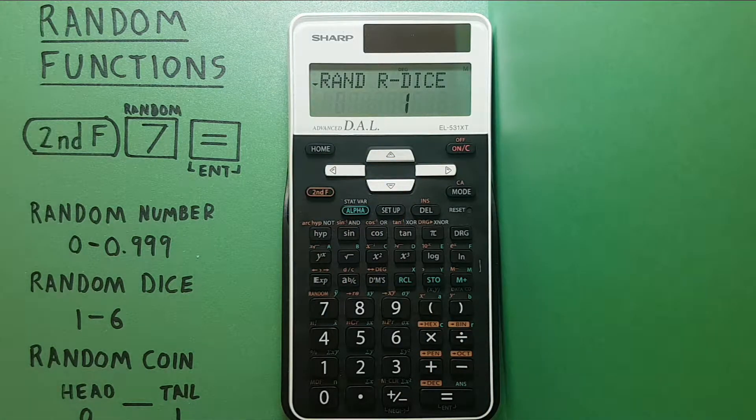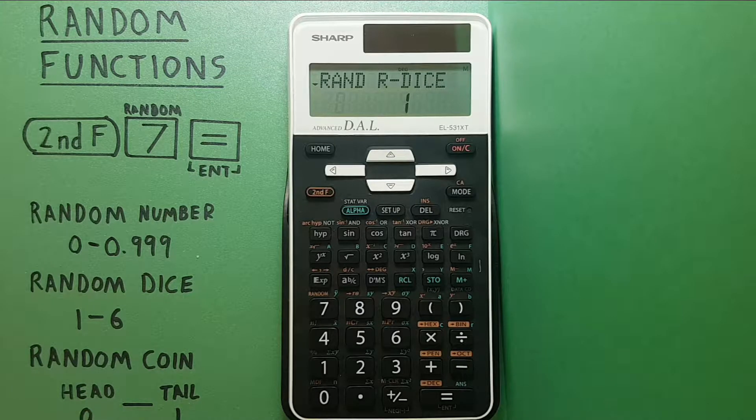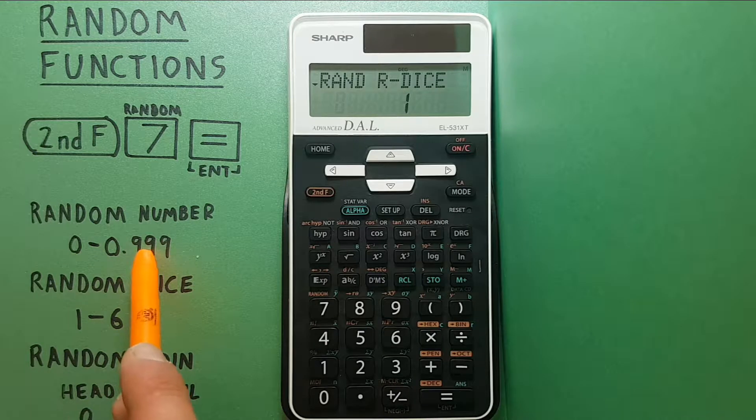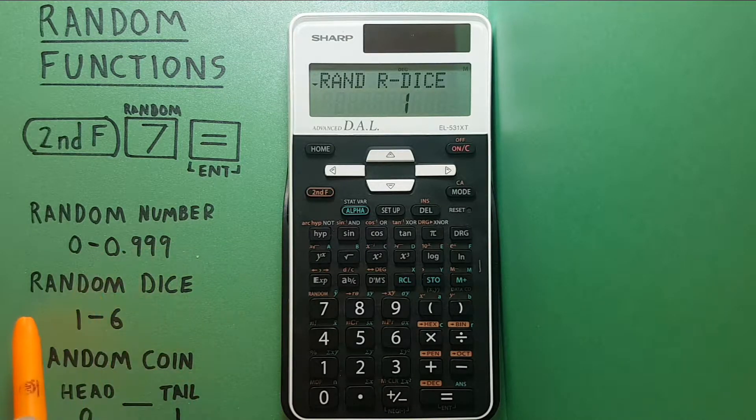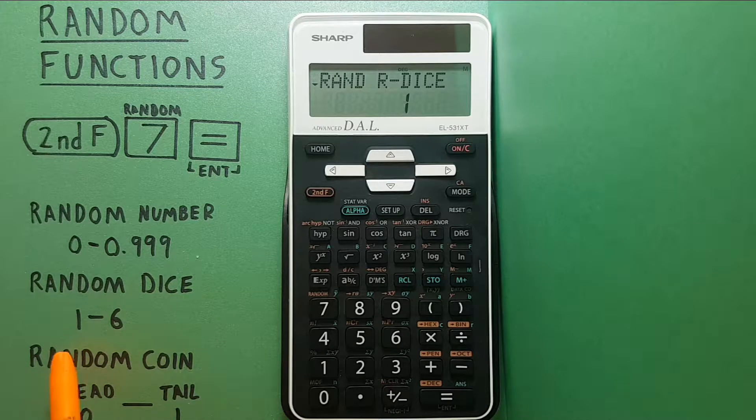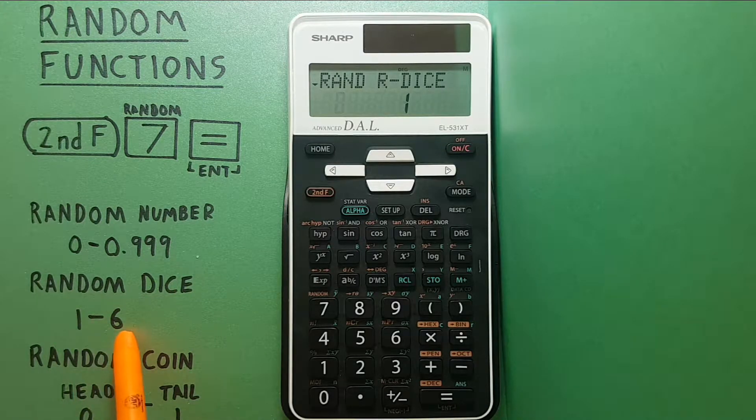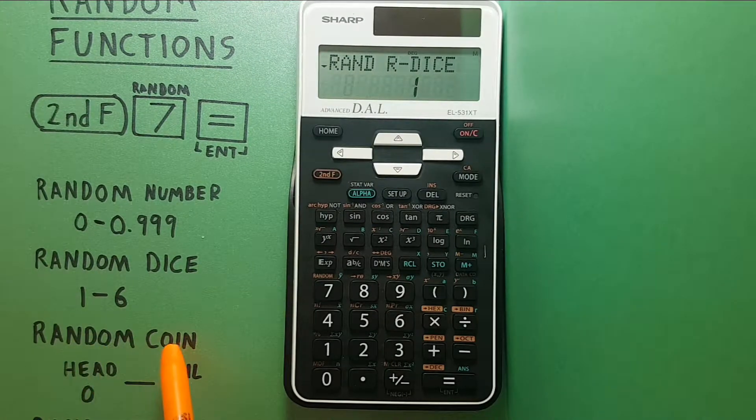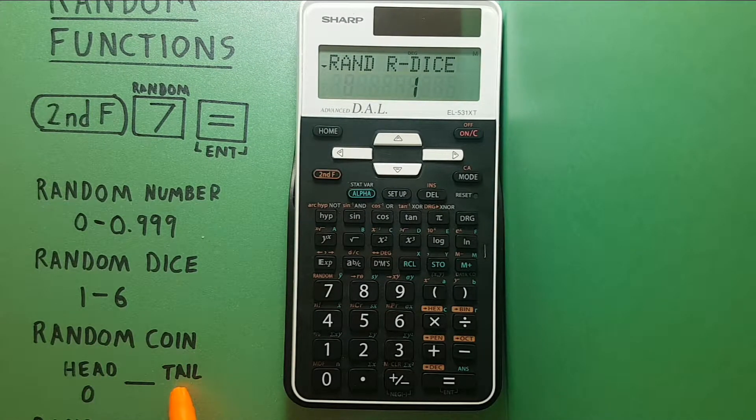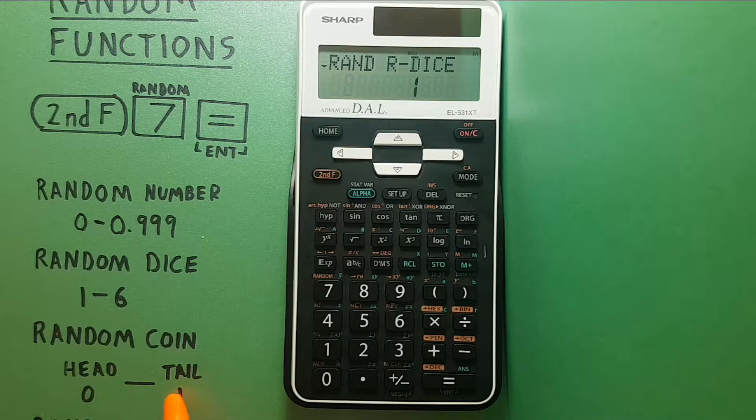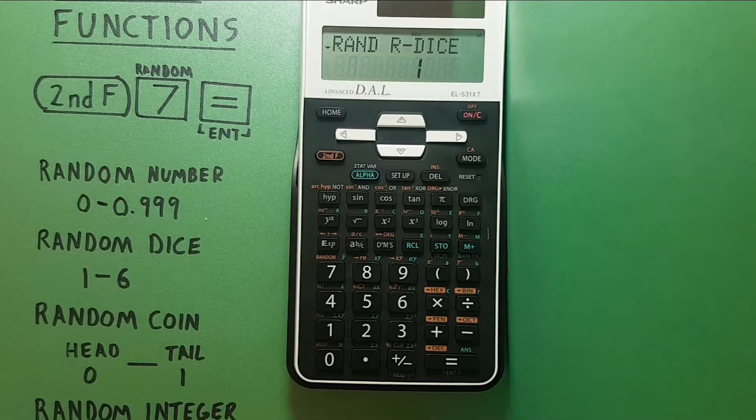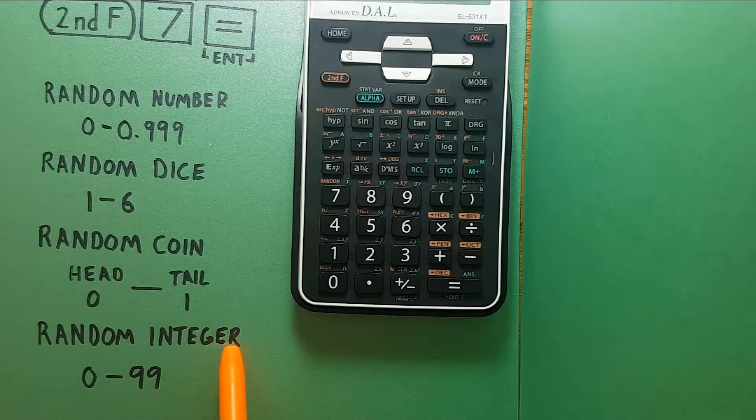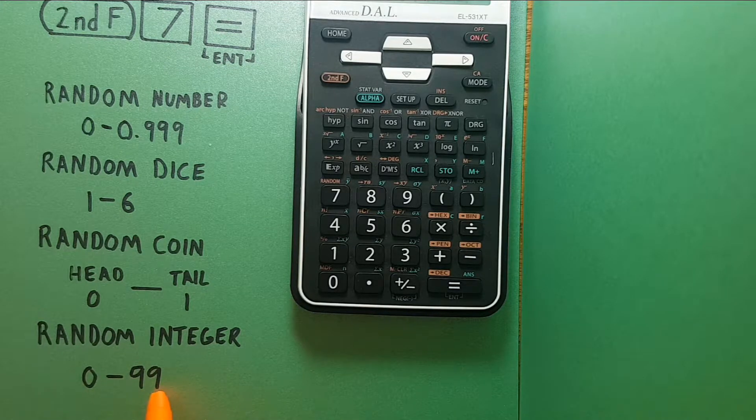Now this calculator has four different options for a random number. You can generate a random number between zero and point nine nine nine. You can simulate a random dice roll generating between one and six. You can simulate a random coin flip to produce a zero or a one, aka a head or a tail, or it can produce a random integer that is between zero and ninety nine.